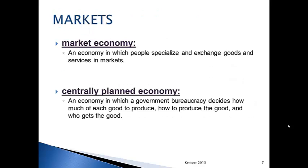Let's move on to markets. The first two markets we're going to cover are market economies and centrally planned economies. The United States is more of a market economy, but we have some similarities to centrally planned economies. A market economy is an economy in which people specialize and exchange goods and services in markets — it's very free flowing. A centrally planned economy is one in which the government decides how much of a good should be produced, at what rate, and who gets that good.